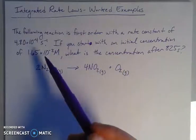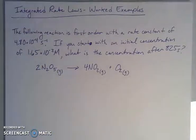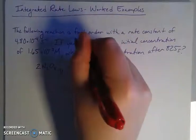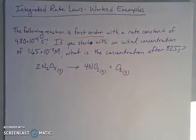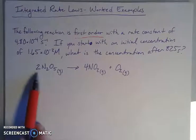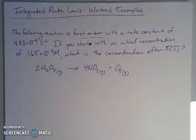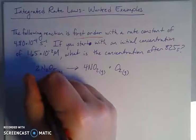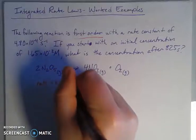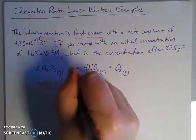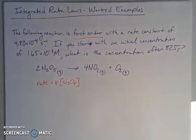The following reaction is first order with a rate constant of 4.80×10^-4 per second. First order means there's a first order dependence on the reactant, which is dinitrogen pentoxide. So the rate equals K times [N2O5] raised to the first power. That's implied, so I won't put the one.